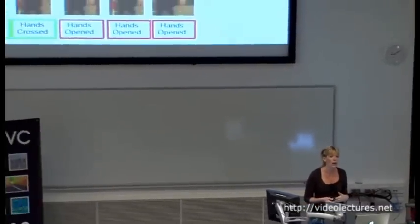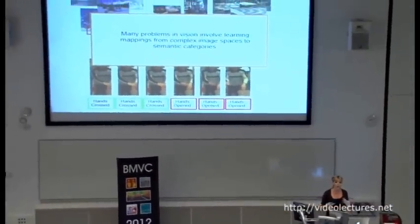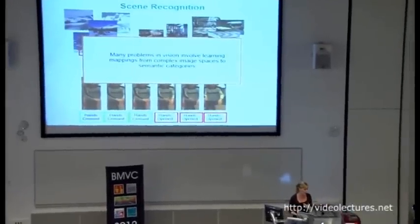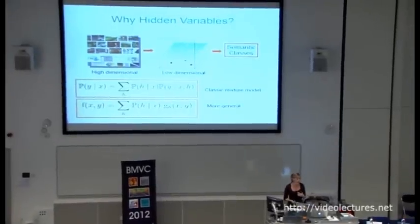Image spaces are very complex and high dimensional, and in order to learn mappings from these complex spaces to semantic categories, one approach we can take is using latent variables. Why use hidden variables? You are probably familiar with the classic mixture model, where the idea is that you have some complex distribution and want to model it as a mixture of simpler distributions. Today I will talk about a more general view of this mixture model, where what you want to learn is some function of some input and perhaps a label, and you assume this function is also a mixture of simpler functions.